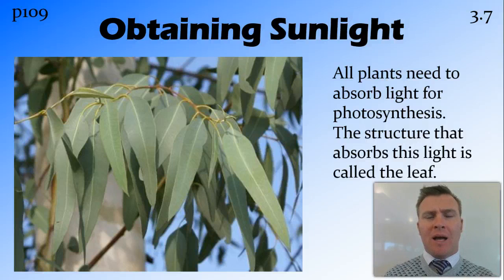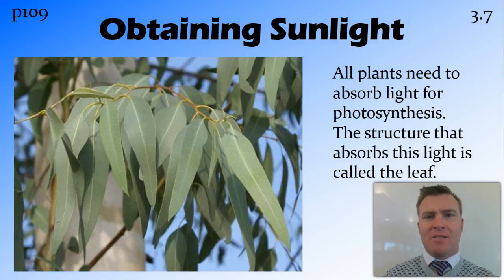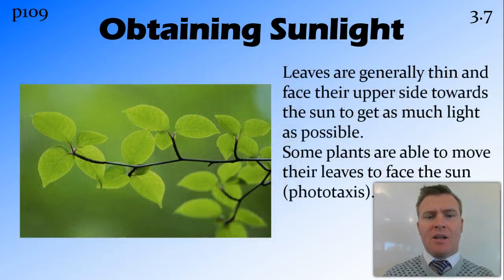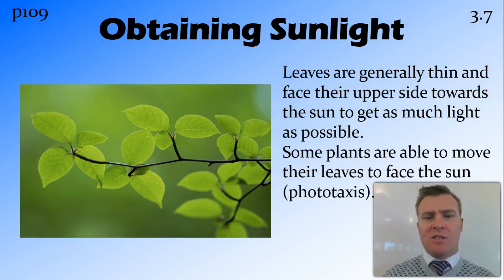Plants undergo the reaction photosynthesis, and for this reaction they need light. The structure on the plant that absorbs light is called the leaves. Leaves are generally thin and flat and are arranged so that the flat side faces towards the sun, so as much surface area as possible is facing towards the sun, getting the most amount of sunlight. Some plants are actually able to move their leaves to track the sun, and this is called phototaxis.